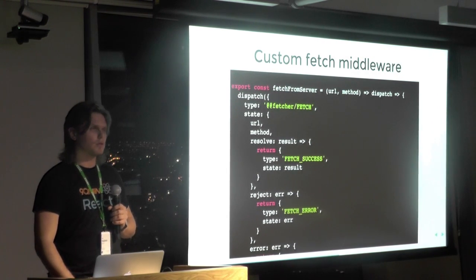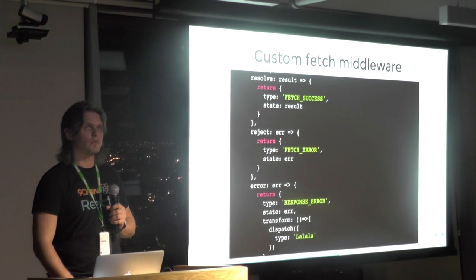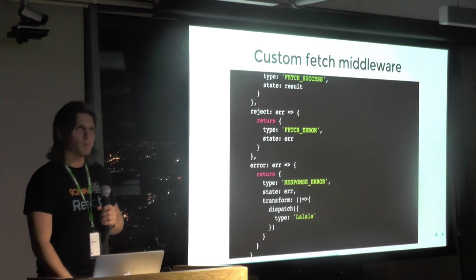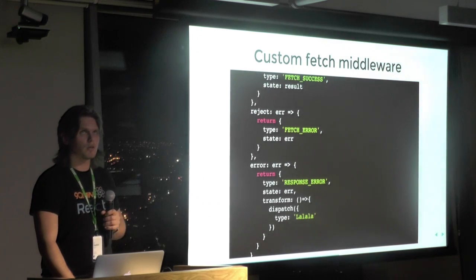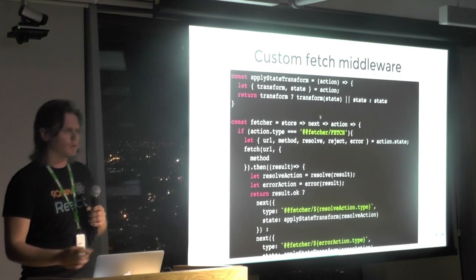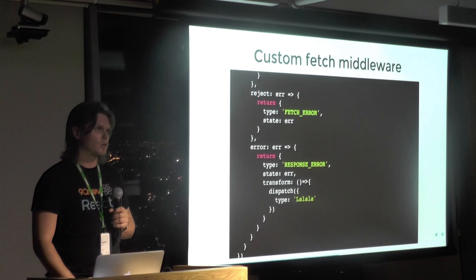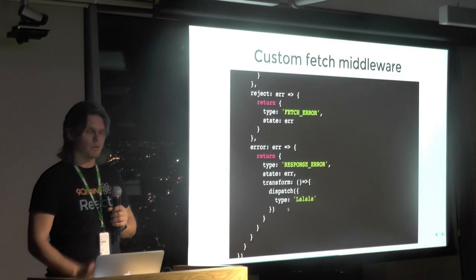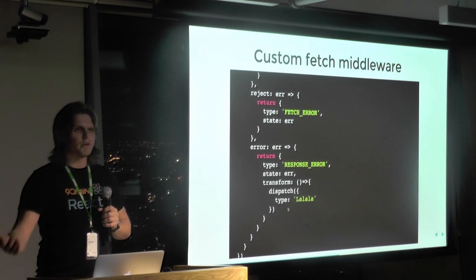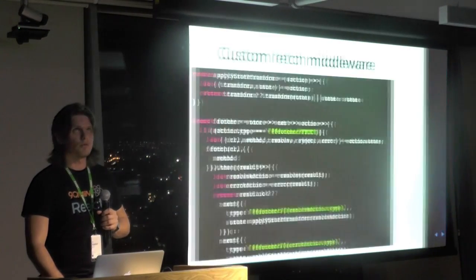Basically my action creator will look like this: fetch from server type with all the data I need, and as you can see there are no functions here. I can also add a transform property to the action, and my middleware's transform is triggered — for example if you need to fetch complex JSON from the server but only need parameter A, you just pass a transform function. All state you get from catching errors goes through the reducer mechanism.